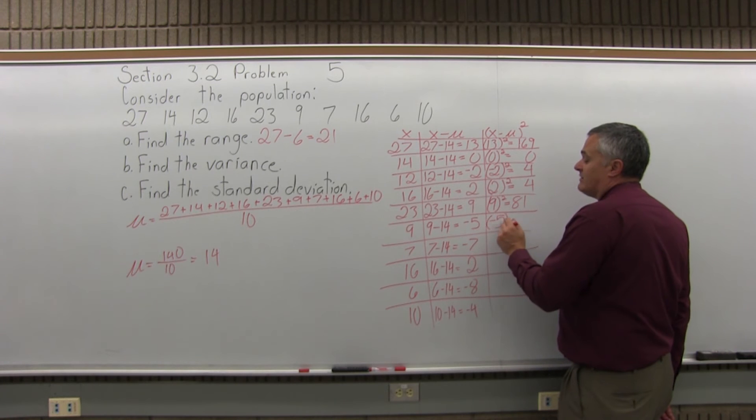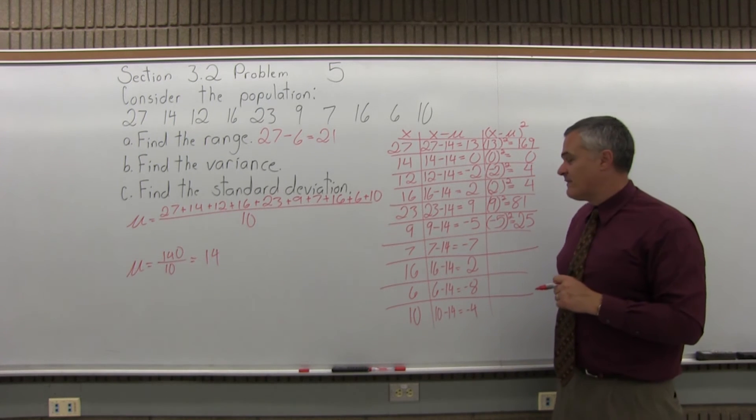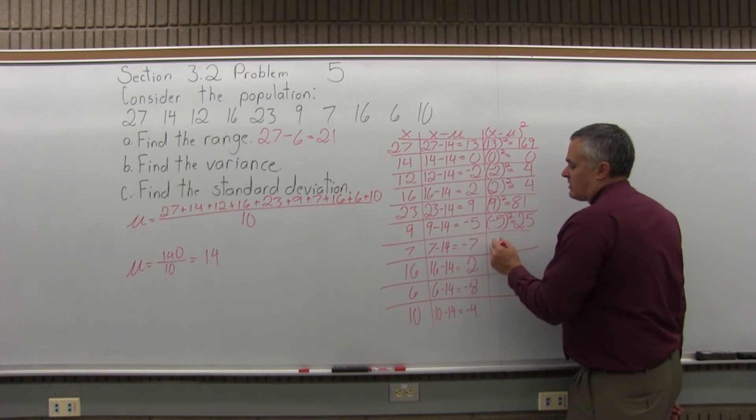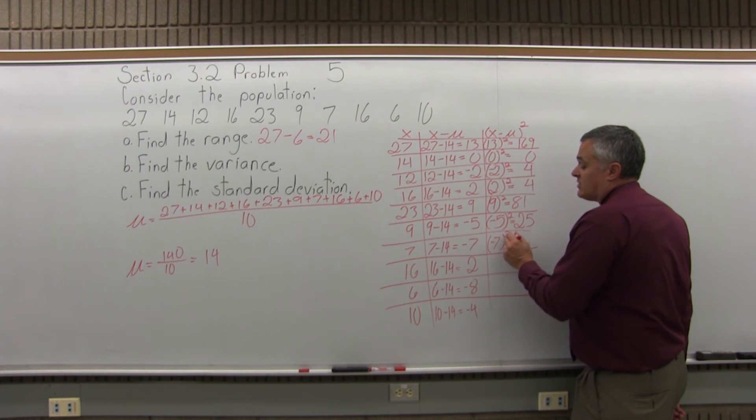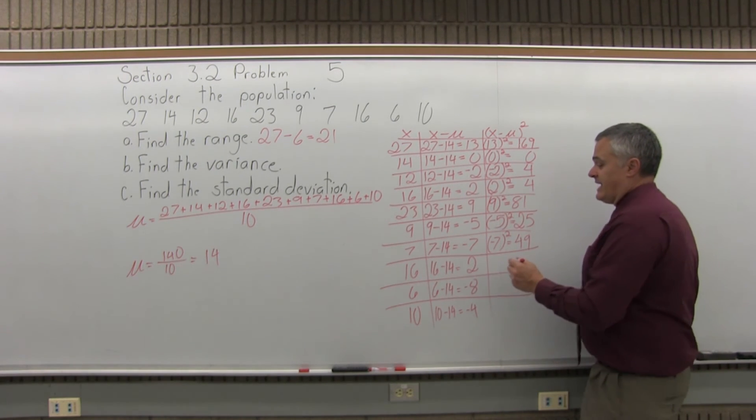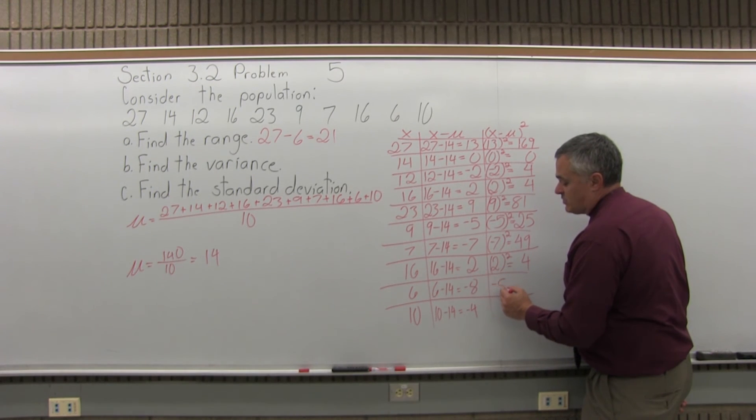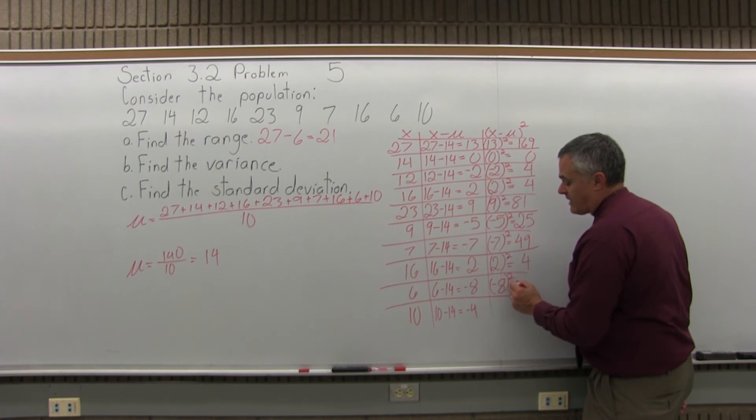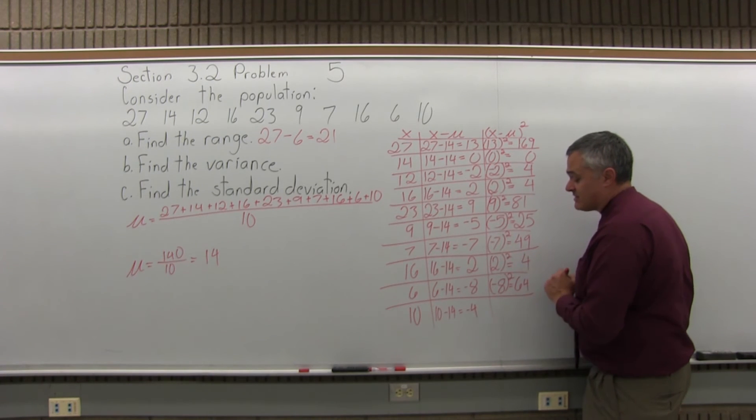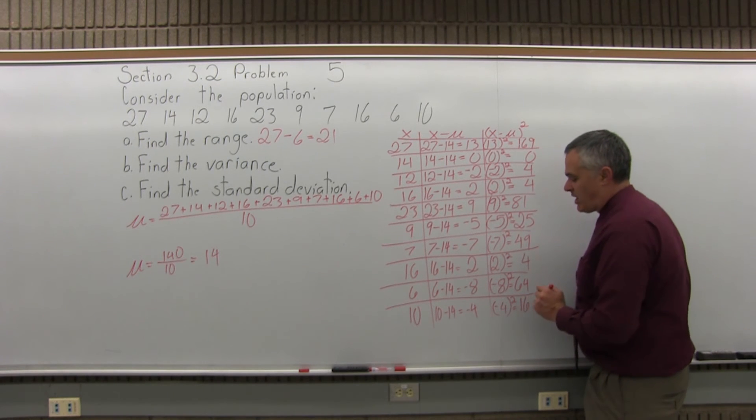Then the next row down was 2, so 2 second power is 4. The next row, x minus mu was negative 8, so negative 8 second power is positive 64. And finally, in the bottom row, x minus mu is negative 4, so negative 4 second power is positive 16.